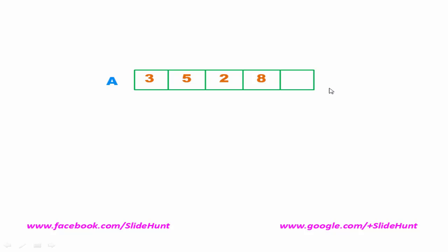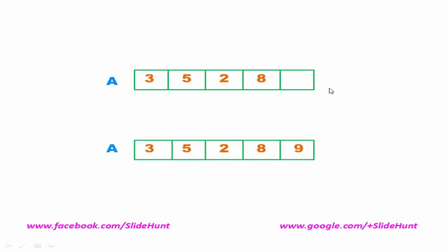But if we want to delete an element from the kth position of the array, where k is less than the upper bound, then what happens? Suppose this is another array and this is the kth position — meaning here we want to delete this element. So what do we do?